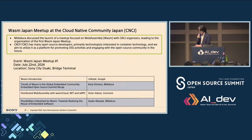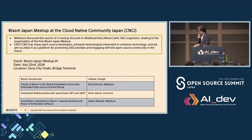We are actively working with open source communities. One example is our collaboration with the CNCF organizer to plan a WasmCon Japan Meetup, which was already held at the Sony Osaka Building. This event covered discussions on WebAssembly not only for edge side but also cloud side and other use cases, and also included introductory content for WebAssembly.